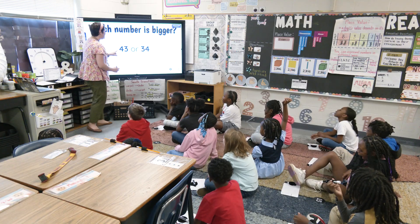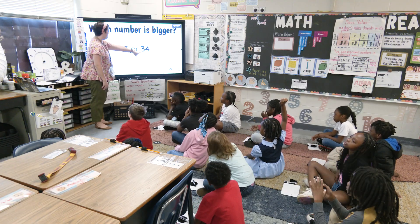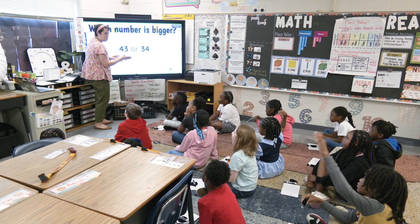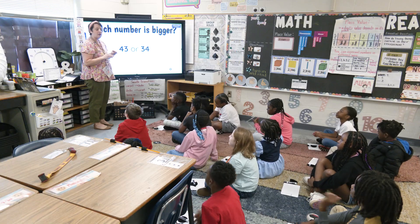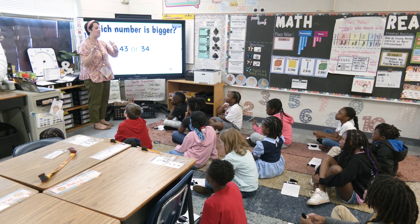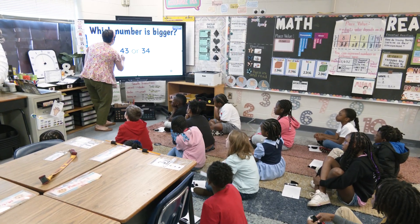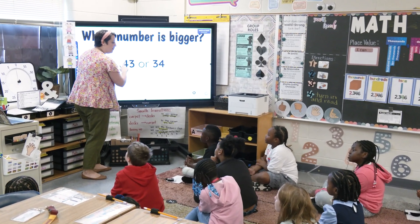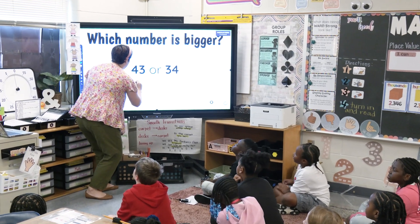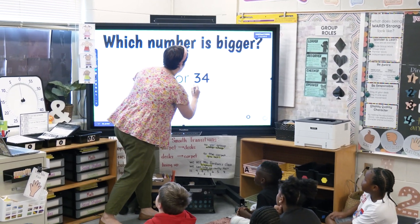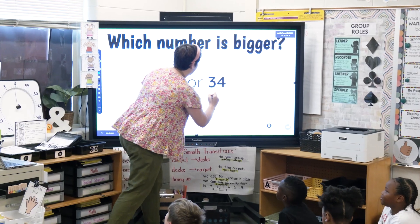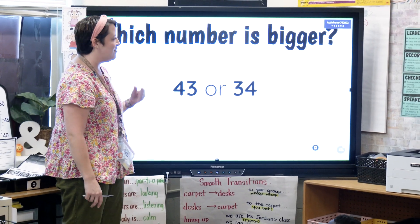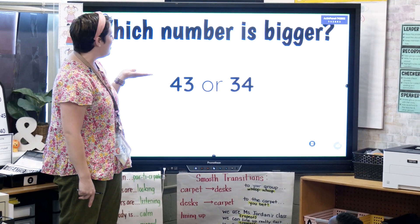You're right — he said 40 is bigger than 30. He looked at the tens place. When you're comparing numbers, you want to start at the highest place value and then work your way down if you need to. He compared the four — what does this four represent? 40, because it's in the tens place. Four tens is 40. Which is bigger, 40 or three tens which is 30? 40 — therefore 43 would be bigger.